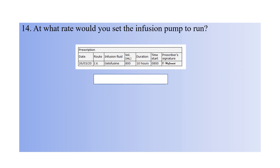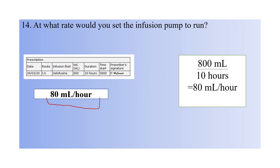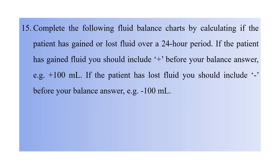Question fourteen: at what rate would you set the infusion pump to run? Route is IV infusion, fluid is Gelofusine, volume is 800 mL, duration is 10 hours, start time 8 AM. The answer is 80 mL per hour. Divide 800 mL by 10 hours to get 80 mL per hour. Set the infusion pump to run at 80 mL per hour.